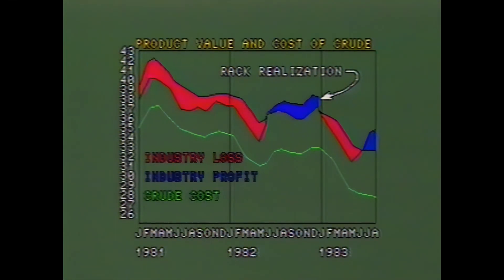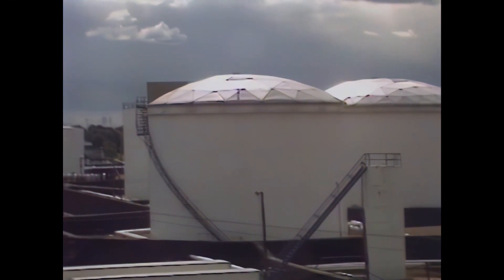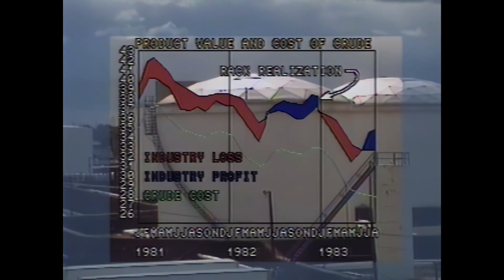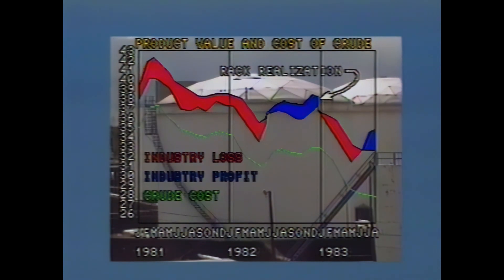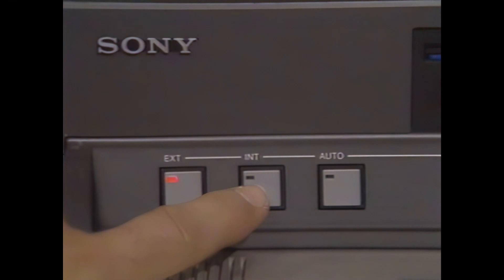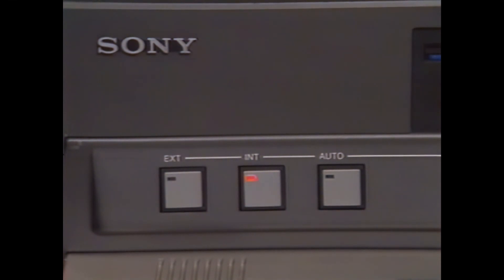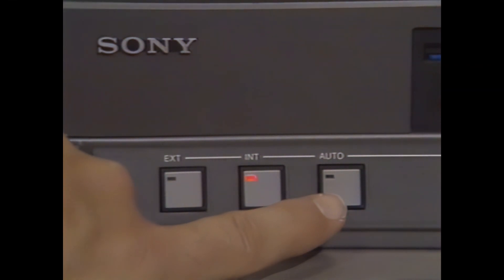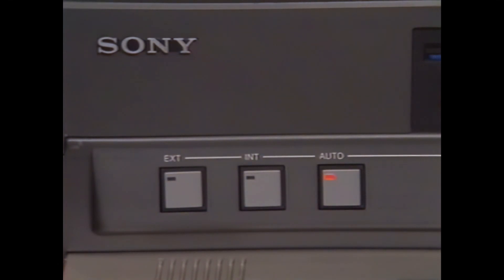There are four picture modes: the computer output, the video output, computer output mixed with video output, and computer output superimposed with video output. You can select an external sync source such as your VTR or sync generator, or the SMC-70G can generate sync internally. The sync mode can be selected manually or be programmed by the software.